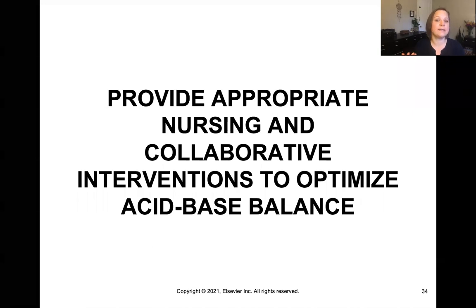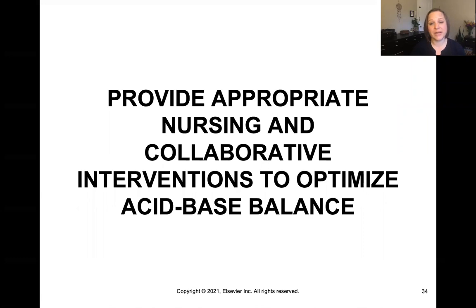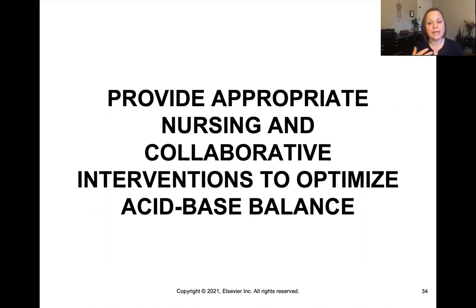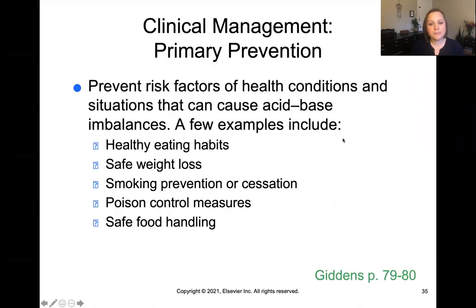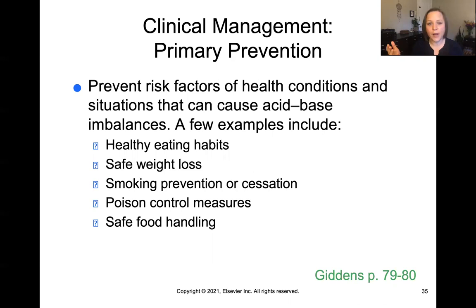At this point you have an understanding of what acid-base imbalance means, you've memorized those numbers, you're able to interpret an ABG using the tic-tac-toe method, and you've come to understand the signs and symptoms for each type of imbalance. Now we need to talk about what collaborative and nursing interventions we perform for acid-base balance. First is prevention — we want to prevent these pH imbalances and prevent any metabolic or respiratory systems from getting out of balance in the first place. There are examples that can reduce risk factors for conditions that might cause an acid-base imbalance.